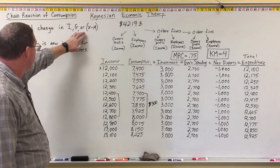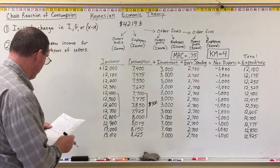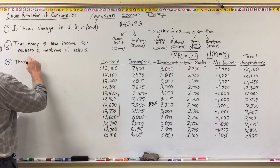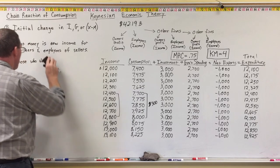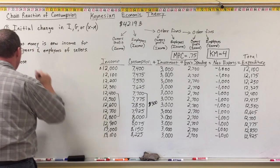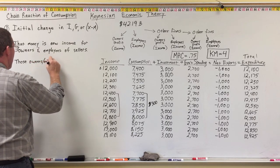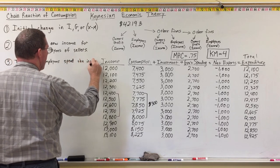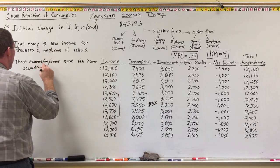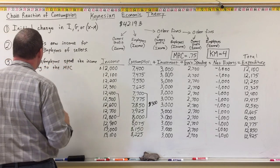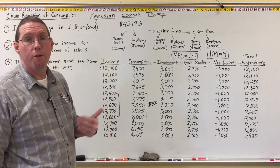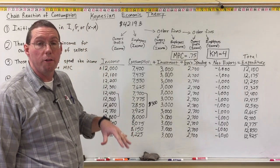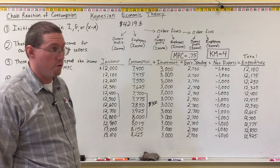This money that was spent becomes new income for the owners and employees of those businesses. Those who receive that income — those owners and employees — are going to spend their new income according to the marginal propensity to consume. They're not going to spend all of it. With a $100 billion increase and MPC of 0.75, they'll spend $75 billion of it. The other $25 billion they're either going to save, pay off debt, or something else.